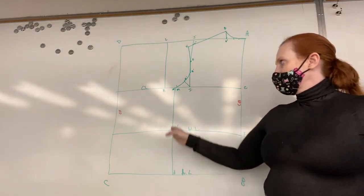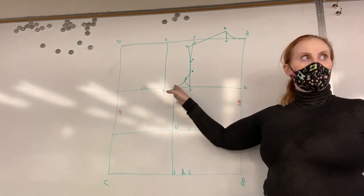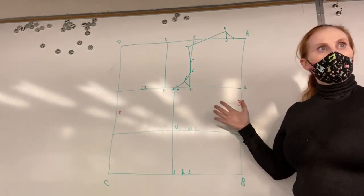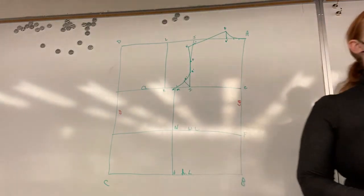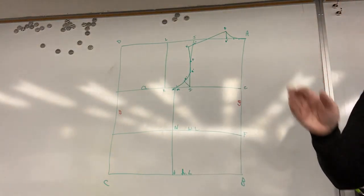So if we were to detach this paper right here, then we would have a back sloper. We're going to keep it attached until we finish the front sloper just to make sure that we have it consistent and that our armseye is nice and smooth.